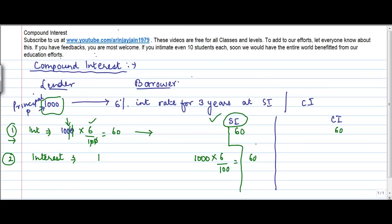But unlike this, in compound interest, what happens is that principal at the end of the year is equal to the original principal plus the interest accrued during the year, which is 60.